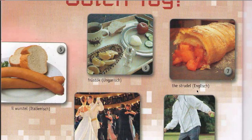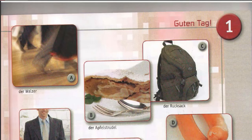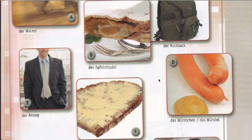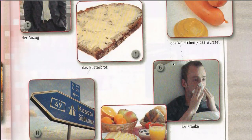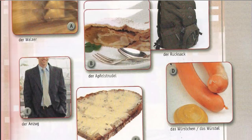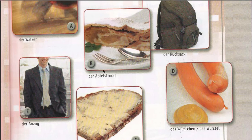Number seven is 'Der Apfelstrudel' — the apple strudel, apple cake. Number seven matches with B. You are eating apple cake, just wrapped on with the boxer, and you will make a ridiculous picture in your head. You will never forget.